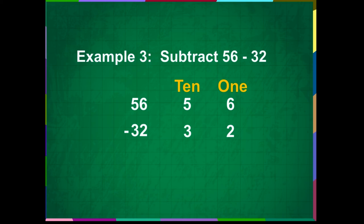First, let us subtract the ones. Draw 6 lines and then cut 2 lines from it. Count the remaining lines. We get 4. Write 4 in the ones place.